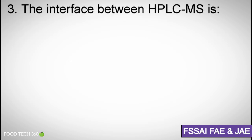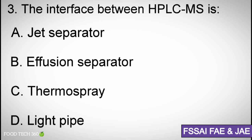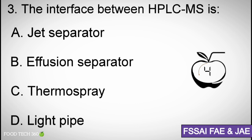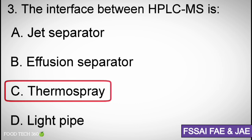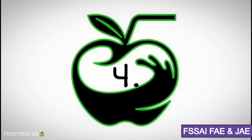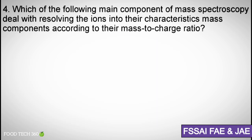Question number three: The interface between HPLC and MS is — options: (a) jet separator, (b) effusion separator, (c) thermospray, (d) light pipe. Correct answer: (c) thermospray.